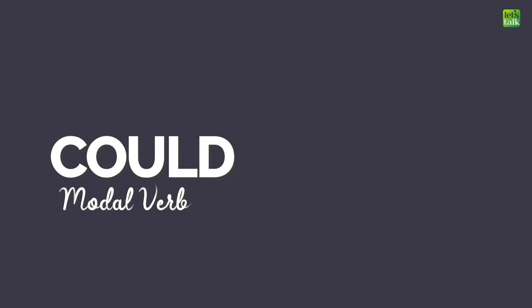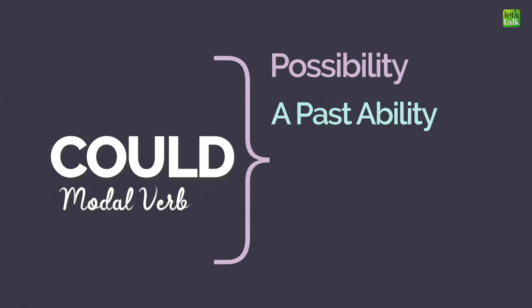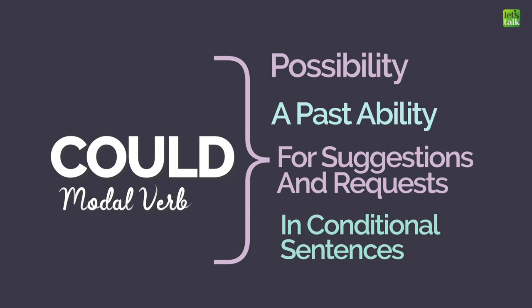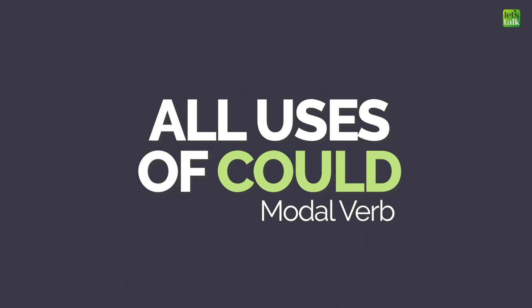Could is a modal verb and is used to express possibility, a past ability, as well as to make suggestions and requests. Could is also used in conditional sentences as the conditional form of can. In this English grammar lesson you will learn all the uses of the modal verb could so that you don't make any mistakes in spoken English.